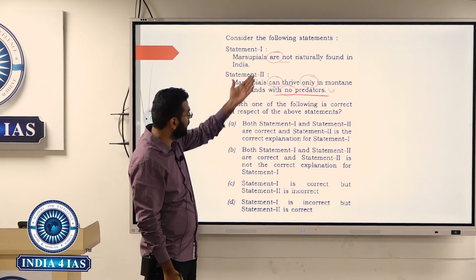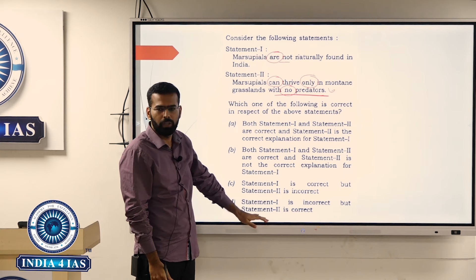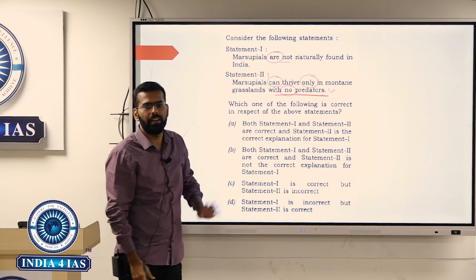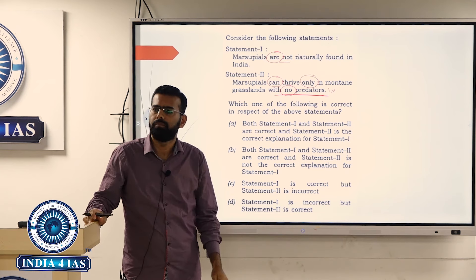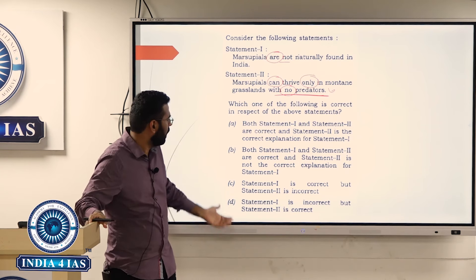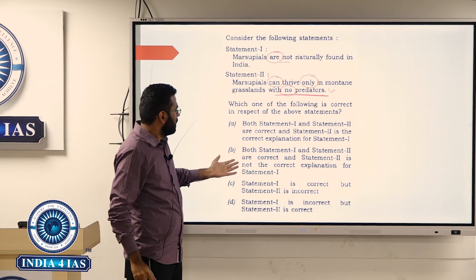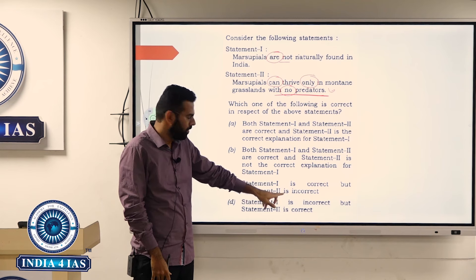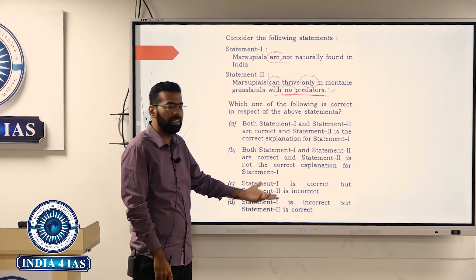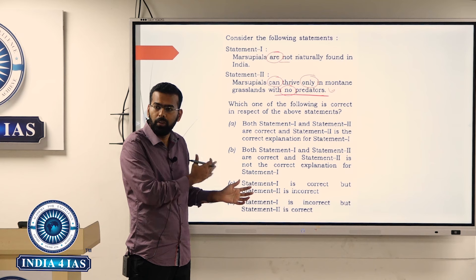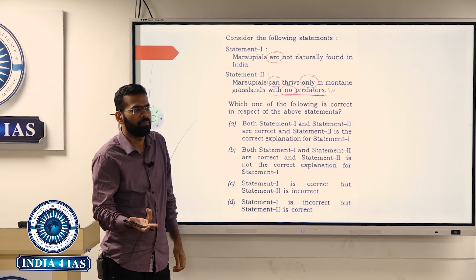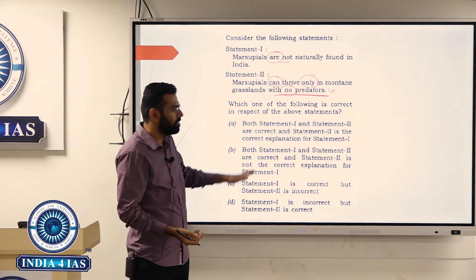And you will get the answer, even because this type of question last time they have set in such a way that if one is wrong you will get the answer directly. So where you have statement one is correct and statement two is incorrect, statement one is incorrect statement two is correct. You don't have an option where both are incorrect. You will get the answer, second is wrong.